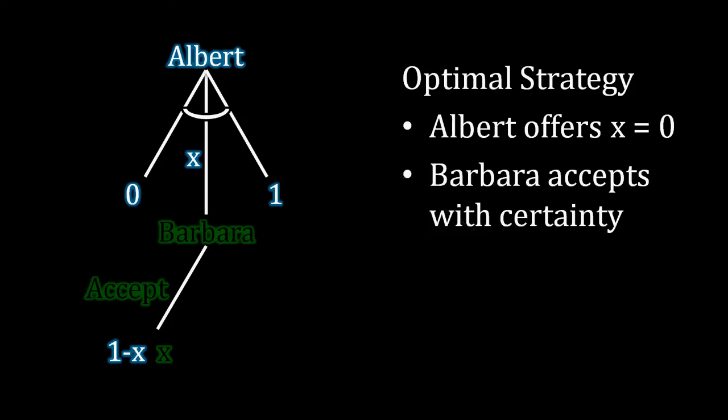So remember back from last time that the optimal strategies that we found, the mutually optimal strategies where one player can't do anything better, given what the other person is doing, is as follows. Albert demands everything for himself. He offers x equal to zero for Barbara, and Barbara is indifferent when she's offered that amount and accepts with certainty. And remember, this is very good for Albert and very bad for Barbara.